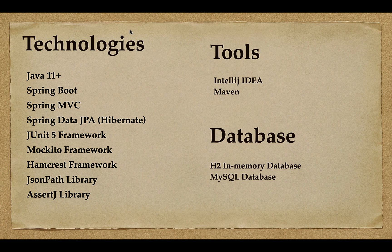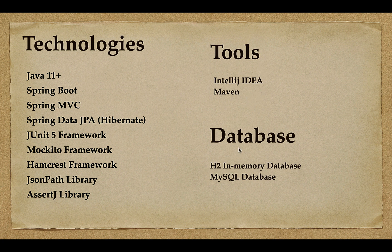The technologies, tools, and databases we'll use in this course include Java 11+, Spring Boot, Spring MVC, Spring Data JPA, JUnit 5, Mockito, Hamcrest, JsonPath, and AssertJ. We'll use IntelliJ IDEA for building the Spring Boot application and writing test cases, Maven for dependency and build management, H2 in-memory database for unit testing the repository layer, and MySQL for integration testing.